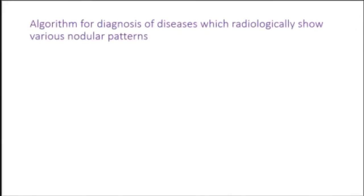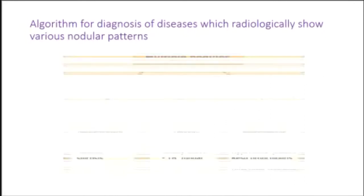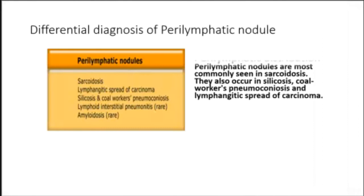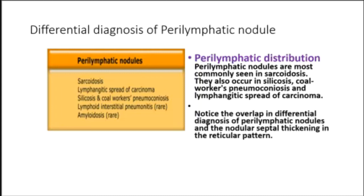If the nodules are diffuse and uniformly distributed, it is likely a random distribution. Perilymphatic nodules are most commonly seen in sarcoidosis, and also occur in silicosis, coal workers' pneumoconiosis, and lymphangitic spread of carcinoma. Note the overlap in differential diagnosis between perilymphatic nodules and nodular septal thickening in the reticular pattern — sometimes the term reticulonodular is used.